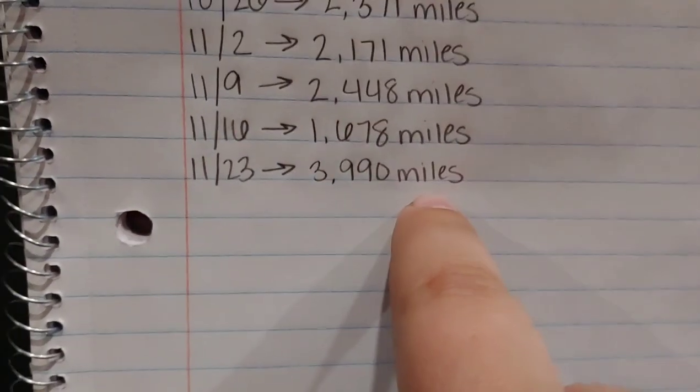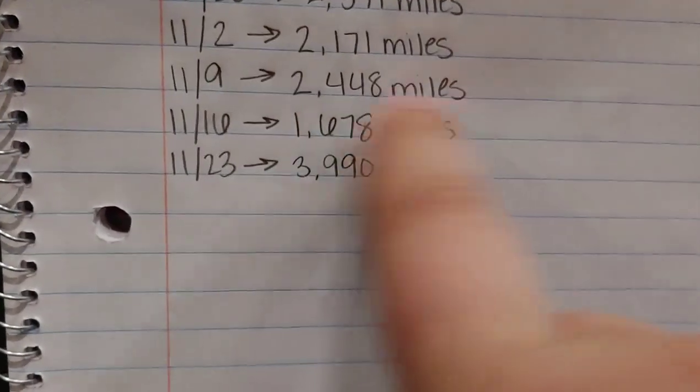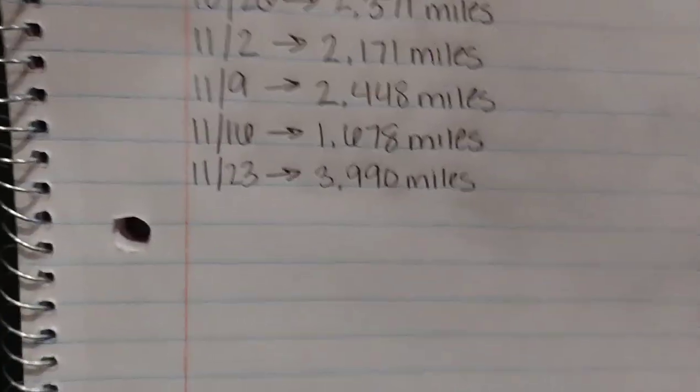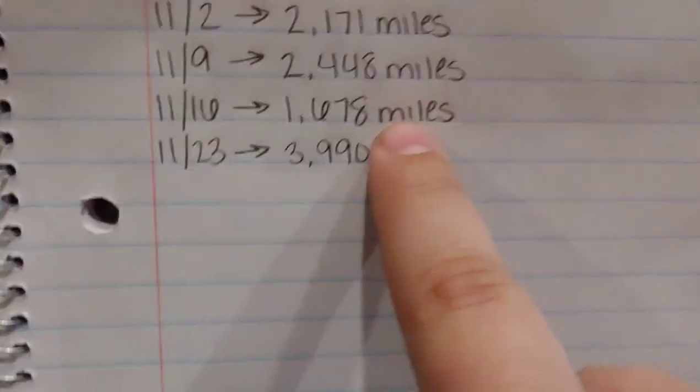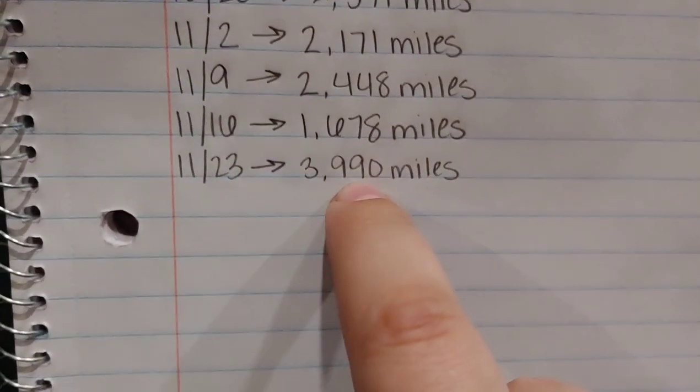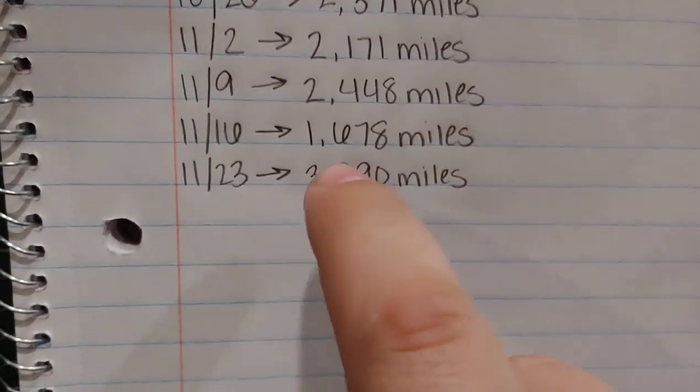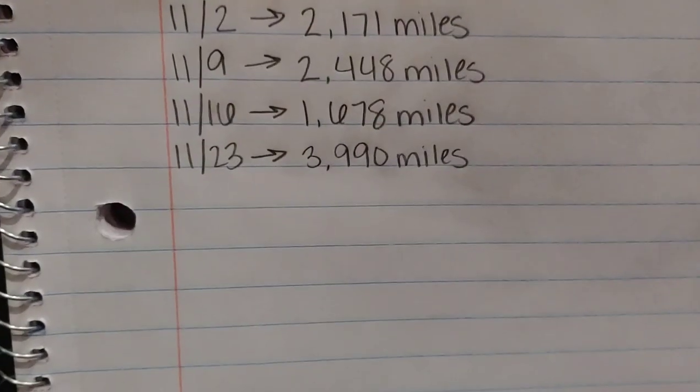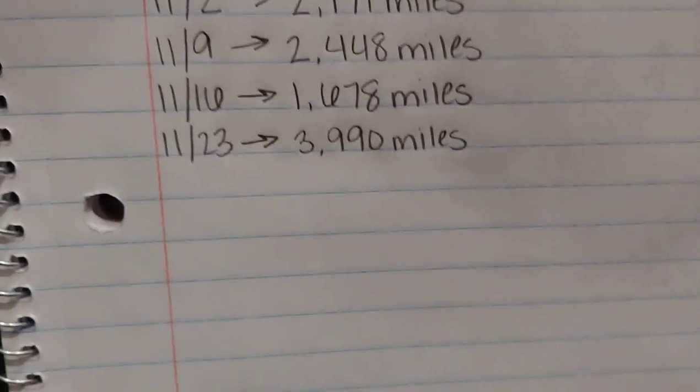So if you subtract 1500 miles from this, it's around 24, I believe. So that would average it back out. So that's the only reason that this week, last week was so low was because it was 1500 miles short because of a load that was supposed to deliver Monday, but ended up having to be delivered Tuesday.